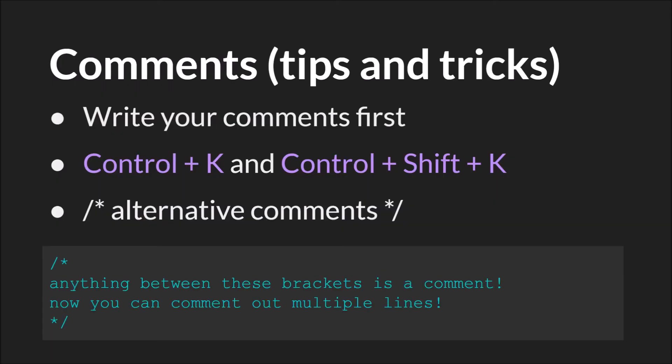Finally, some tips and tricks for comments. One thing worth trying is writing your comments first — write out what your code is supposed to do as comments in English, then go back through and add those lines of code in. This can be a great way of structuring your code before you start. Second, something I use all the time: Ctrl-K will comment out all highlighted lines, and Ctrl-Shift-K will uncomment them. This is incredibly useful for quickly commenting out or uncommenting whole blocks of code. There's also an alternative for long comments using forward slash asterisk and asterisk forward slash — anything between those two is a comment.